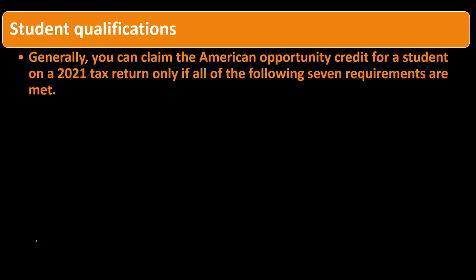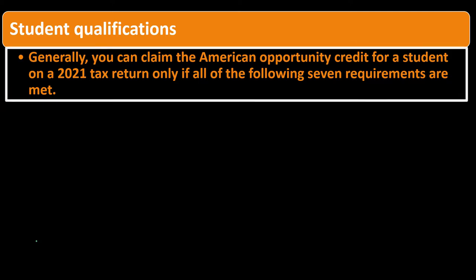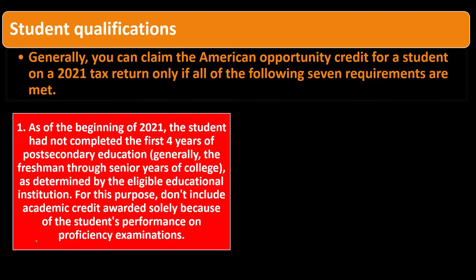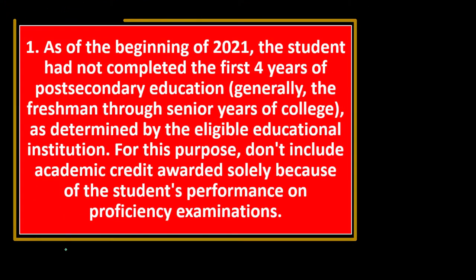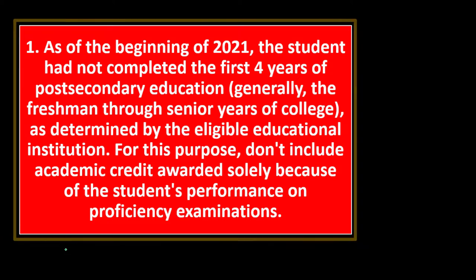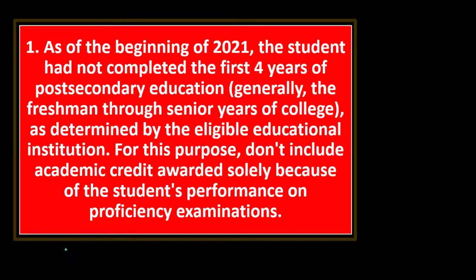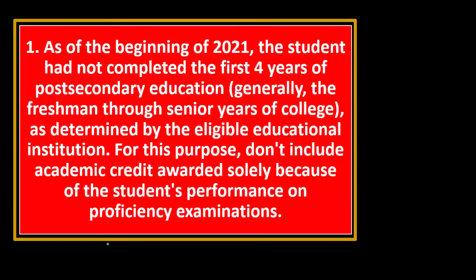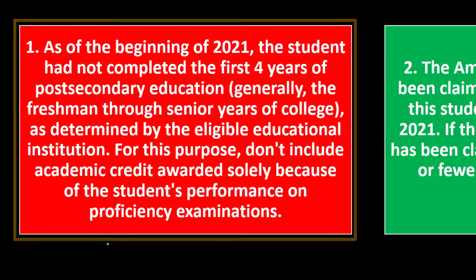Student qualifications: you can claim the American Opportunity Credit for a student on a 2021 tax return only if all seven requirements are met. Requirement one: as of the beginning of 2021, the student had not completed the first four years of post-secondary education — generally the freshman through senior years of college, as determined by the eligible educational institution. Don't include academic credit awarded solely because of the student's performance on proficiency examinations.